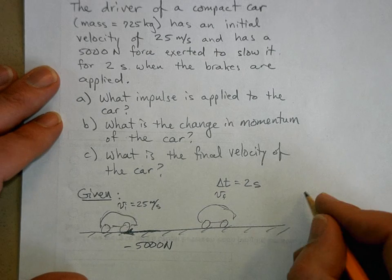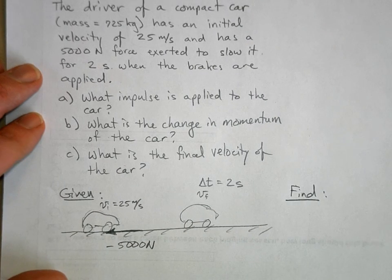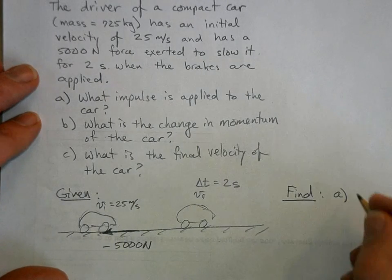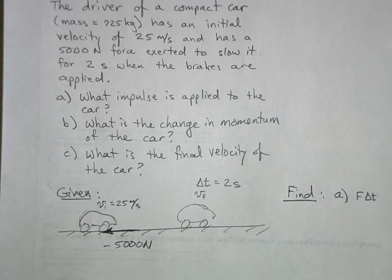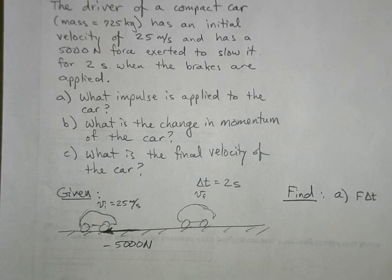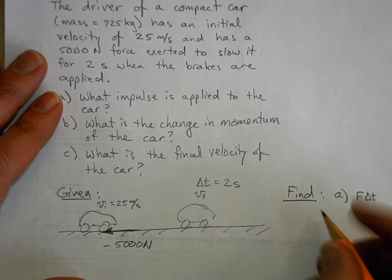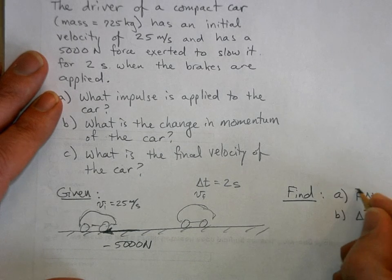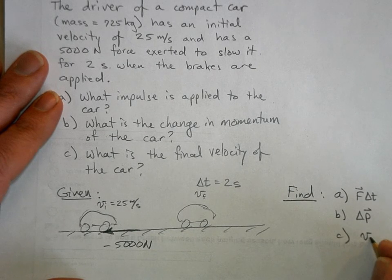Okay and so what we want to find. And I'm on camera, yeah okay. What I want to find for A is the impulse, I'll just call that force times time. There are some books that use the capital letter I to stand for impulse, I don't think our textbook does but you can use that if you want, capital I. For B we want to know what is the change in momentum. And for C we want to know what is the final velocity of the car.